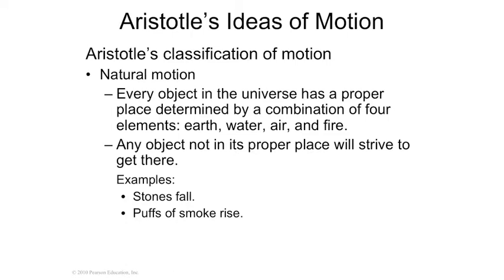The first person we need to talk about is Aristotle. Aristotle was the teacher of Alexander the Great, so he was one of the great Greek philosophers of antiquity. He was so influential on hundreds and hundreds of years of people after him because the books that he wrote were considered to be authoritative. Everybody would say Aristotle is so smart he couldn't make a mistake — but he made so many mistakes. He didn't really go about science the way scientists go about science.